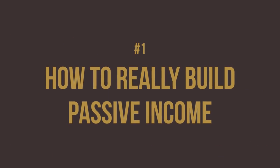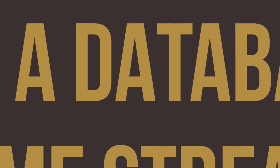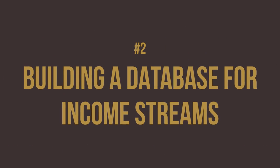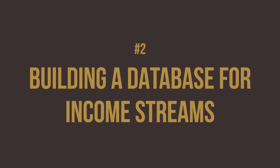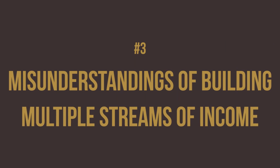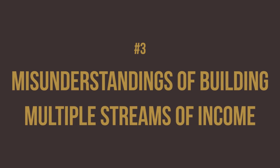The three things I want to talk about: how do you really build passive income and what does that mean? Number two, how do you build a database of extra streams of income and really build that out of other joint ventures? And I'm going to tell you what I do for MSIs, multiple streams of income. And number three, what are the biggest misunderstandings of multiple streams of income?